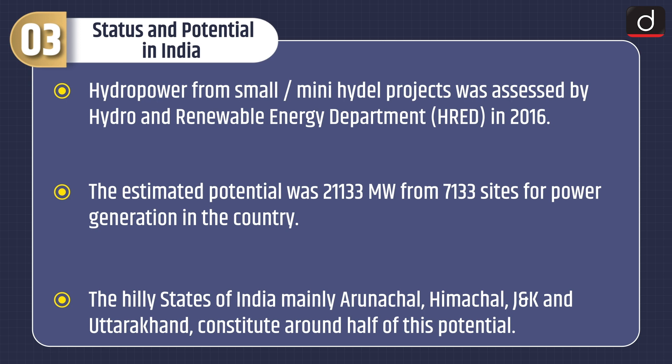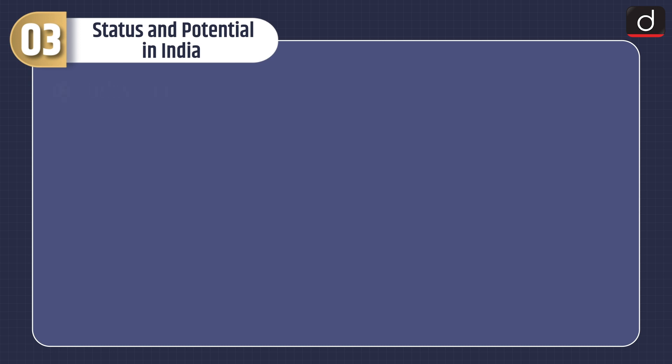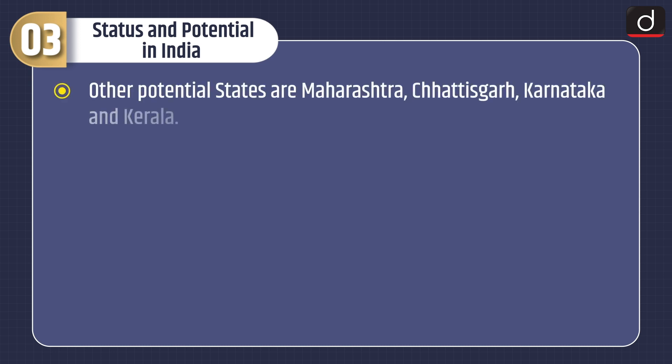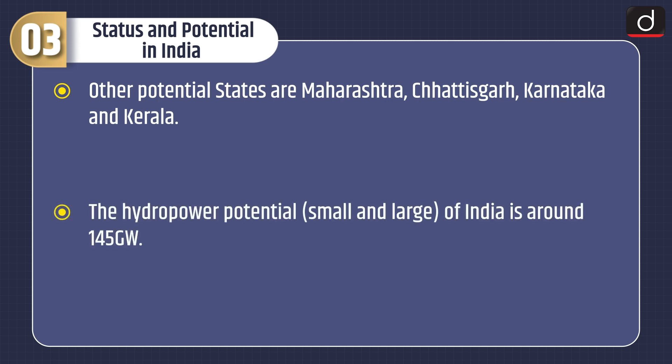The hilly states of India, mainly Arunachal, Himachal, Jammu and Kashmir, and Uttarakhand, constitute around half of this potential. Other potential states are Maharashtra, Chhattisgarh, Karnataka, and Kerala. The hydropower potential, small and large, of India is around 145 gigawatt.